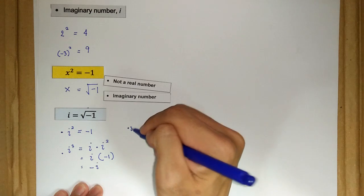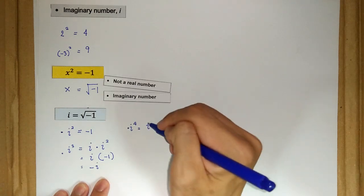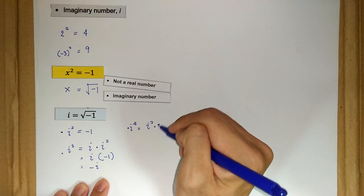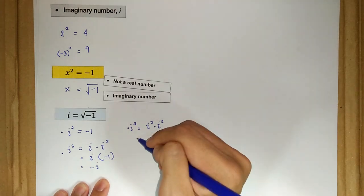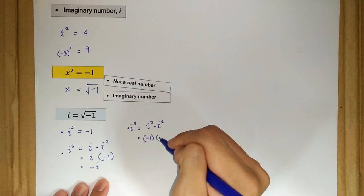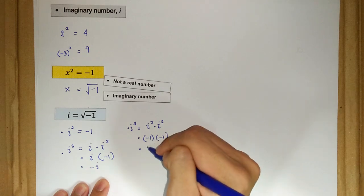What about i to the power of 4? It's just i squared times i squared, which is negative 1 times negative 1, equal to 1.